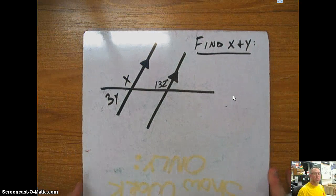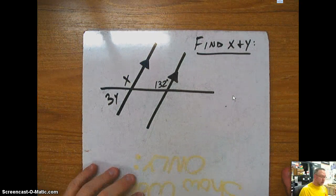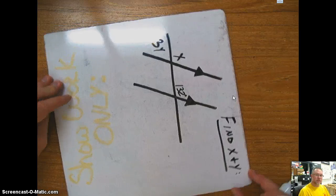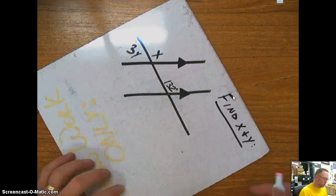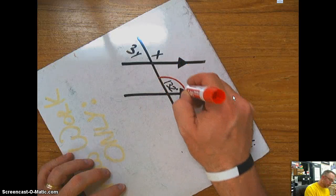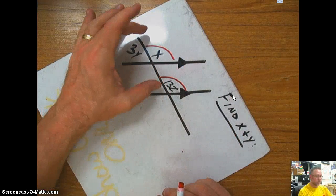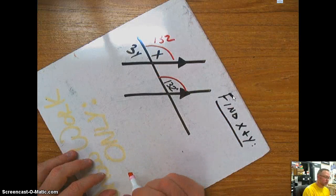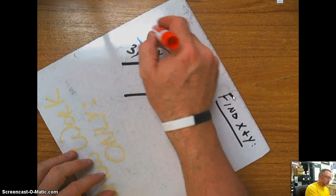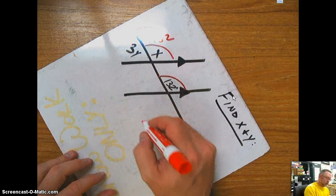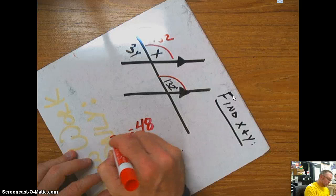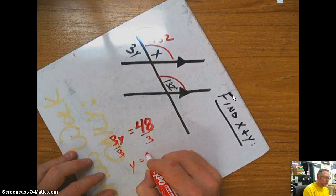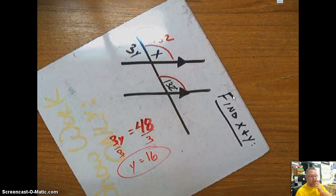A couple more examples — one where we have to set up an equation. If I recognize that my parallel lines go in a certain direction and I have my transversal, this angle and this angle are corresponding because they're both on the top and on the same side of the transversal. So this is already 132 degrees. I subtract that from 180, which gives me 48. That equals 3y, so solving the one-step equation gives me y equals 16, and that's my degree measurement.